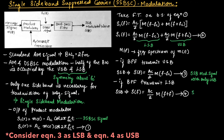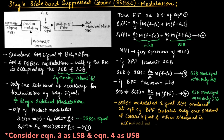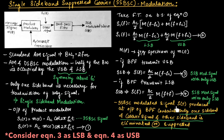Equation number 4 represents the SSB modulated signal with only the lower sideband. Hence, the SSB modulated signal S(t) produced at the output of the band pass filter contains only one sideband; the carrier signal and the other sideband are eliminated or suppressed. That is why it is known as single sideband suppressed carrier modulation.